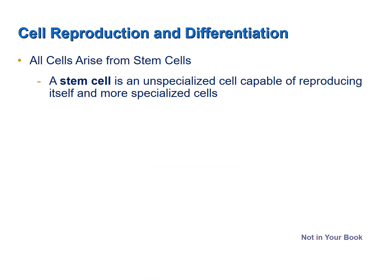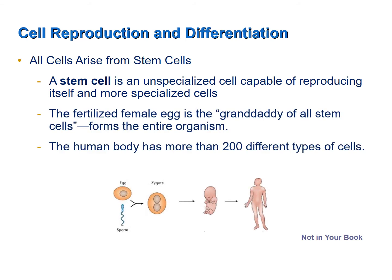One of the basic principles of biology is that cells arise from other cells. Every cell that exists in your body today came from another cell. A stem cell is an unspecialized cell capable of reproducing more stem cells or differentiating into more specialized cells. The fertilized female egg is, as your book puts it, the granddaddy of all stem cells, because that one single cell gives rise to all of the cells of the body — more than 200 different types of cells and trillions of cells in total.